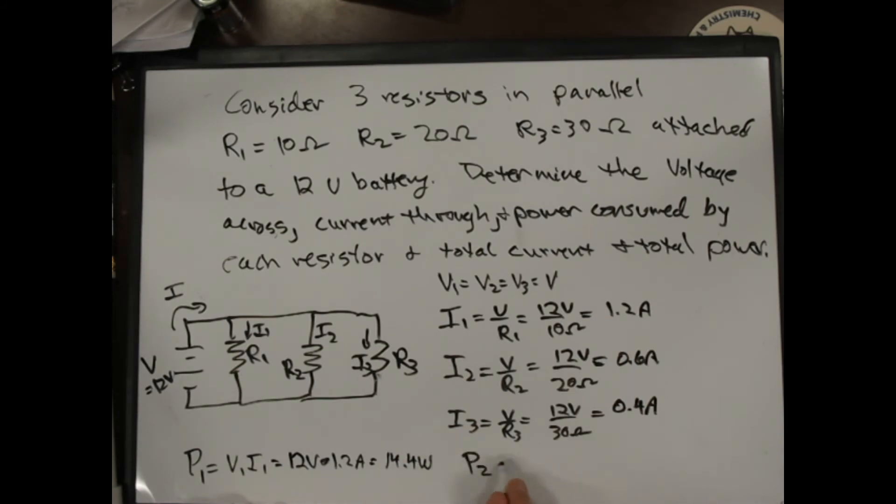Similarly, P2, it's just the same voltage and half the current, so it'll be 7.2 watts. And finally, P3 is 12 volts and 0.4 amps, which is 4.8 watts.